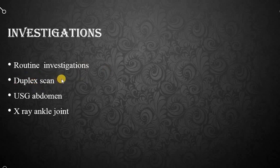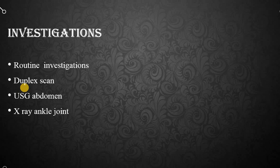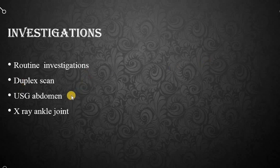For investigations, routine investigations are done, and the most important is a duplex scan of the lower limb. By duplex scan we can see how far the great saphenous vein is dilated, which perforators are incompetent, whether there is reflux at the saphenofemoral junction, and whether the short saphenous system is normal. Importantly, we must rule out deep vein thrombosis, because if DVT is present then surgery for varicose veins is contraindicated — if we block the superficial system in DVT, the limb will develop severe edema and progressively progress to venous gangrene.